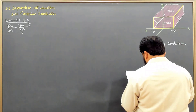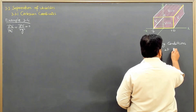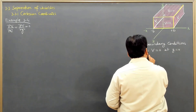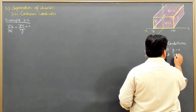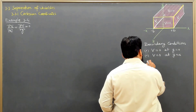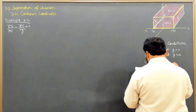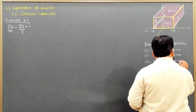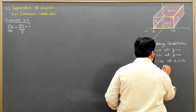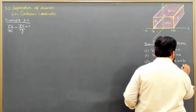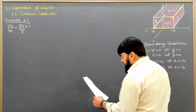The boundary conditions are: first, V=0 at y=0 (the bottom plate); second, V=0 at y=a (the top plate); third, V=V₀ at x=+b; and fourth, V=V₀ at x=−b. So these are the four boundary conditions for this problem.